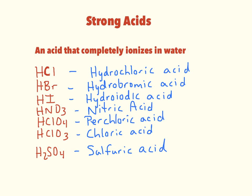There are a group of acids called strong acids. Strong acids are acids that completely ionize in water. If you put any of these seven compounds into water, they will totally break apart — if you put a thousand of them in, almost all thousand molecules will break apart to make hydrogen ions and the anion. You're going to need to memorize these formulas and names: hydrochloric acid, hydrobromic acid, hydroiodic acid, nitric acid, perchloric acid, chloric acid, and sulfuric acid.